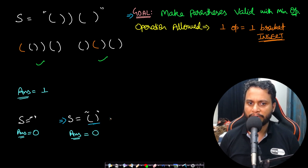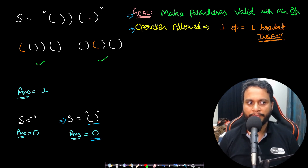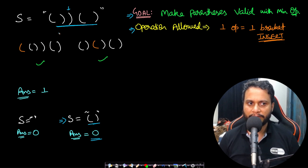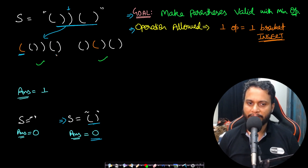The operation allowed is: one operation equals one bracket inserted. Given a string that is not valid — you can see there is an over-balancing of a closing bracket — you need to add an opening bracket to the left side. If you add it at the beginning it becomes valid with only one operation.